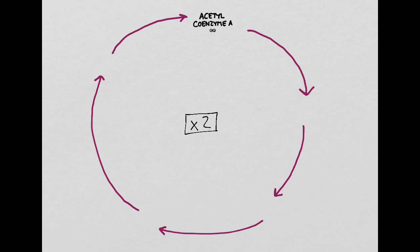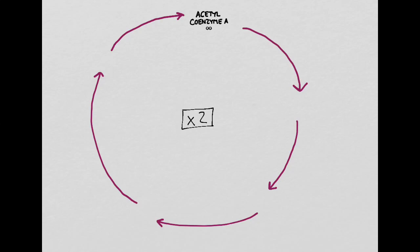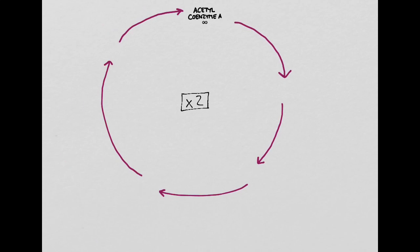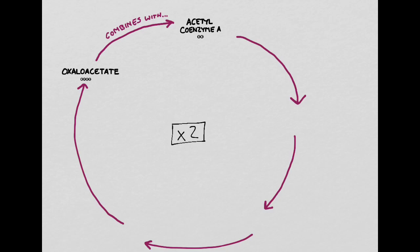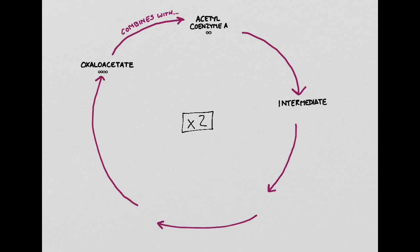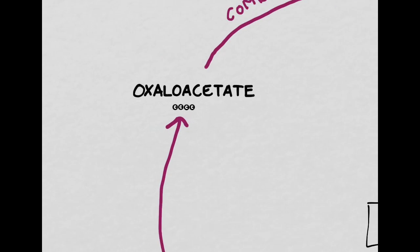Acetyl-CoA is going to enter the Krebs cycle — remember that it has two carbons. If we look ahead several steps in the Krebs cycle, we're going to discover a compound called oxaloacetate. Oxaloacetate is created after many steps in the Krebs cycle and has four carbons. Oxaloacetate will then combine with the molecule of acetyl-CoA that we made during the prep steps. This combination forms an intermediate molecule. Since oxaloacetate has four carbons and acetyl-CoA has two carbons, this intermediate will have six carbons.